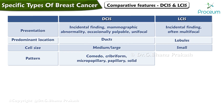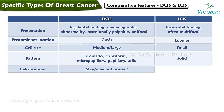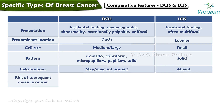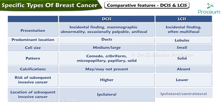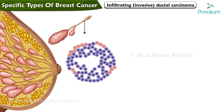Ductal carcinoma in situ can exhibit patterns such as comedo, cribriform, micropapillary, or solid growth, while lobular carcinoma in situ is usually solid. Calcifications may or may not be present in ductal carcinoma in situ but are typically absent in lobular carcinoma in situ. The risk of subsequent invasive cancer is higher in ductal carcinoma in situ and lower in lobular carcinoma in situ. In ductal carcinoma in situ, recurrence tends to be ipsilateral, while in lobular carcinoma in situ it can be ipsilateral or contralateral.